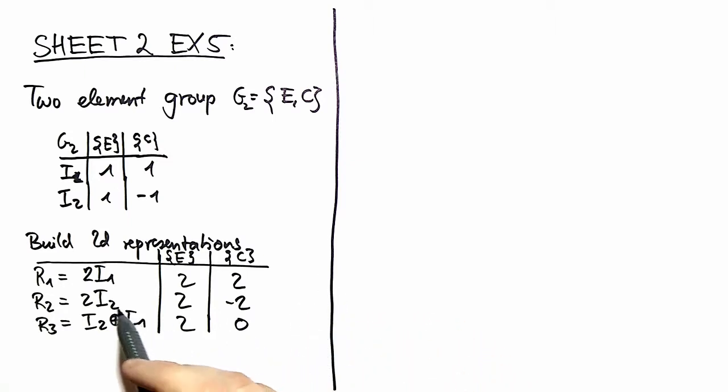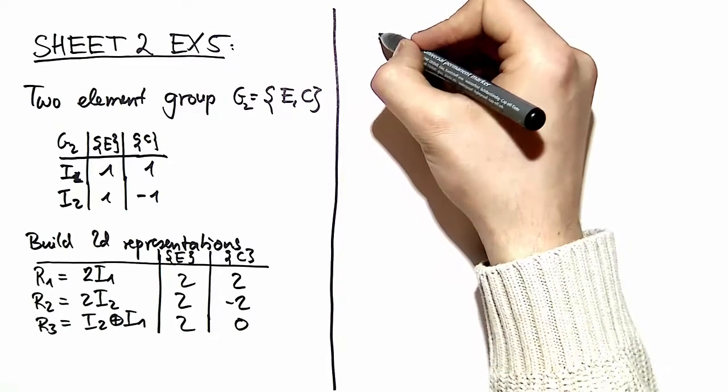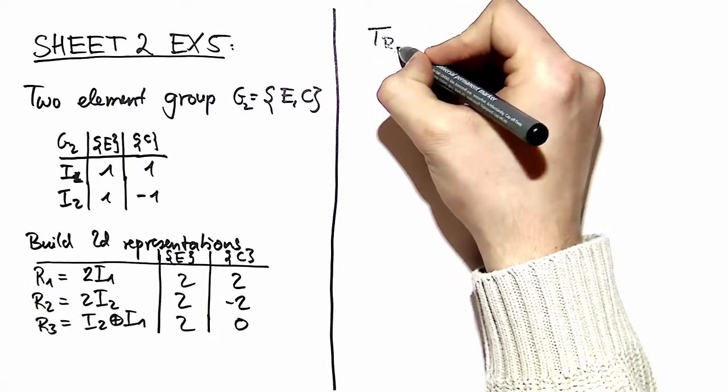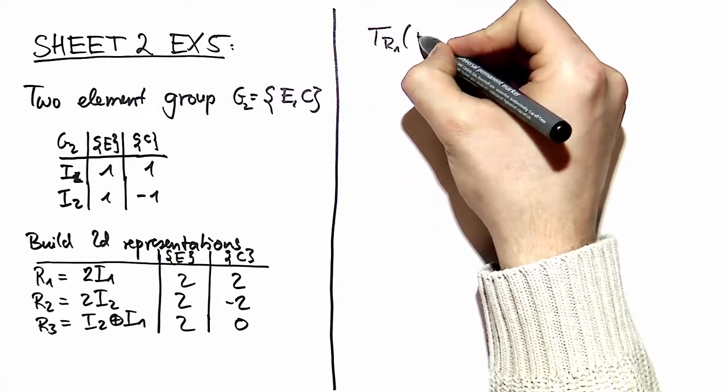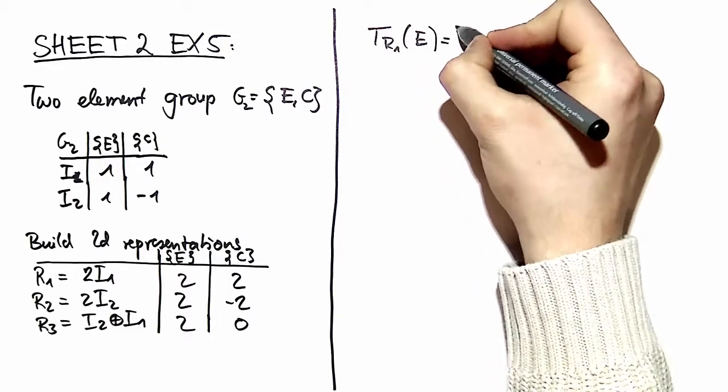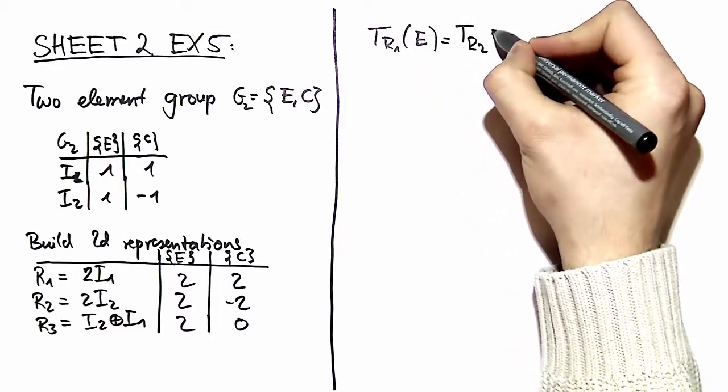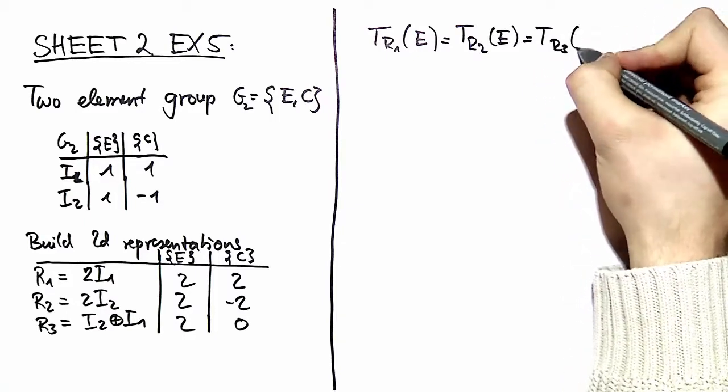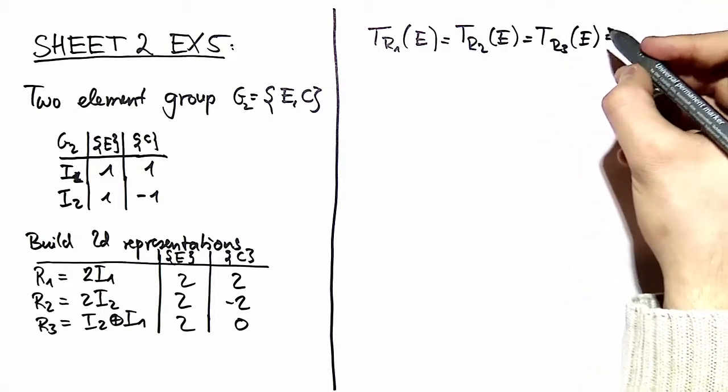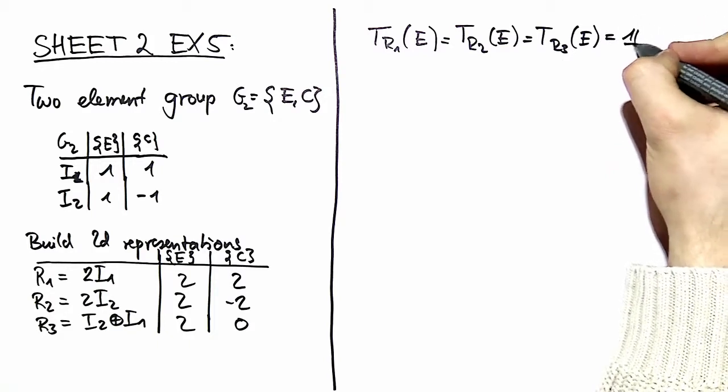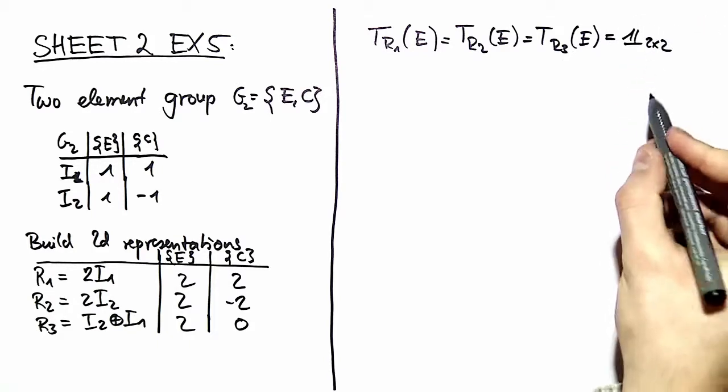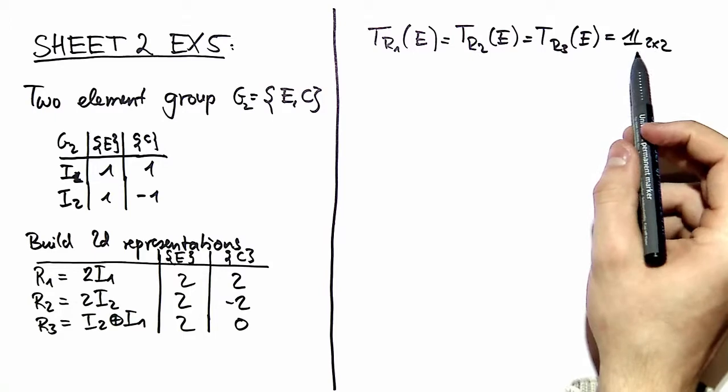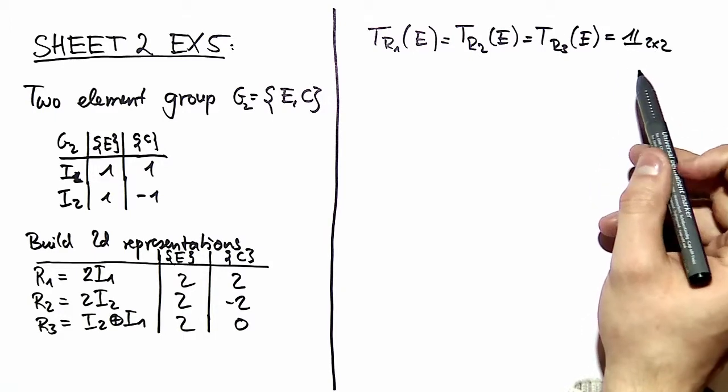When we look at the matrix representations of these three reducible two-dimensional representations, we notice that the matrix representations of R1 of our identity element, and the matrix representation of R2 of our identity element, and the matrix representations of our identity element in the representation R3, is just identical and the 2x2 identity matrix. You can get this from dimensional analysis.